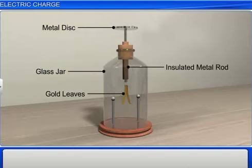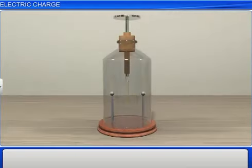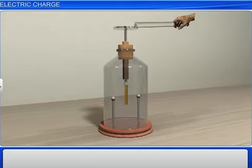To test a material like a glass rod for electrification, the object should be brought in contact with the metal disc of the gold leaf electroscope. The contact should be momentary. If there is no change observed in the position of the gold leaves, it indicates that the glass rod is uncharged or is neutral.